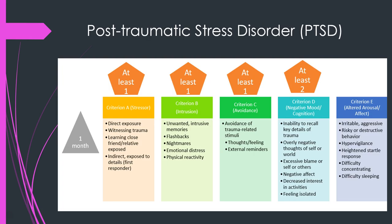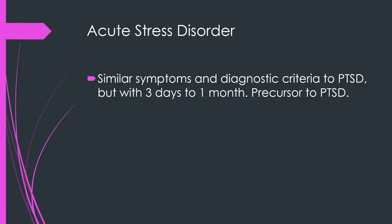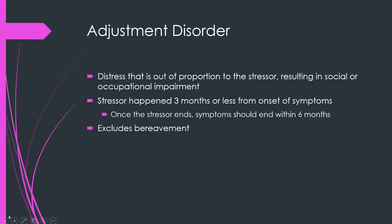PTSD has several criteria — you need at least one from the first three and at least two from the fourth, covering stressors, intrusive thoughts, avoidance, negative mood or cognition, and altered arousal or affect. Acute stress disorder is similar to PTSD but occurs between three days and one month after the event, often considered a precursor to PTSD. Adjustment disorder is sometimes used as a catch-all for distress out of proportion to a stressor that results in social or occupational impairment; the stressor must have occurred within three months, and once it ends, symptoms should resolve within six months.